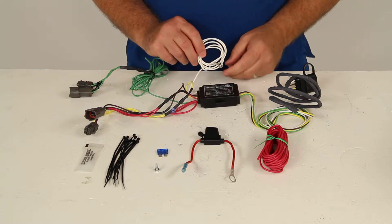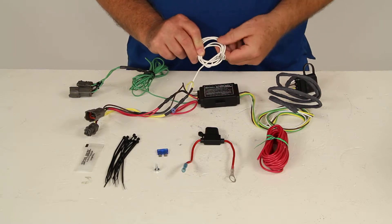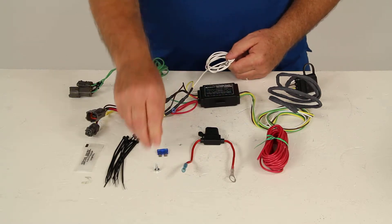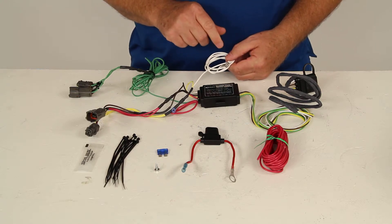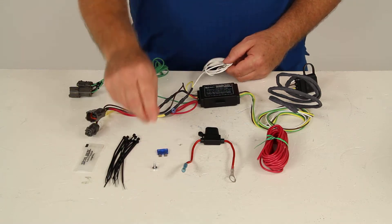And then you'll have the extra wires here that need to be attached. This white wire with the eyelet on it, this is your ground wire. You want to get a good clean ground for the module. So you can use an existing screw that's a good clean ground or you can drill a hole and use this grounding screw to ground with.